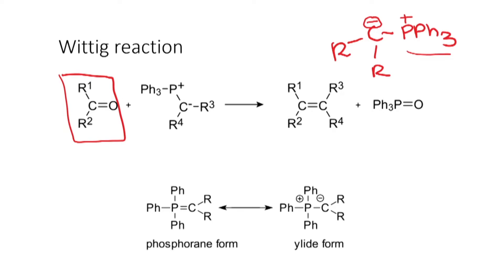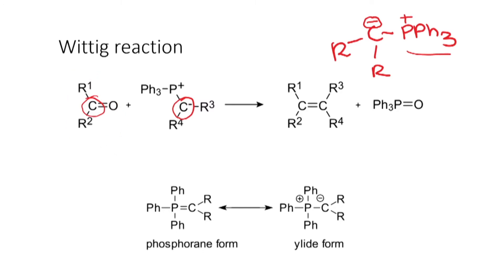This ylid is a very good nucleophile, so the ylid can attack the carbonyl and give you this product. Before we go into the details of the mechanism, what we need to understand is there is a bond formed between this carbon and this carbon, and the C=O is gone. There is no carbonyl, and there is now a double bond between these two carbons.